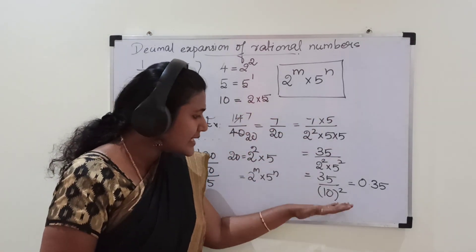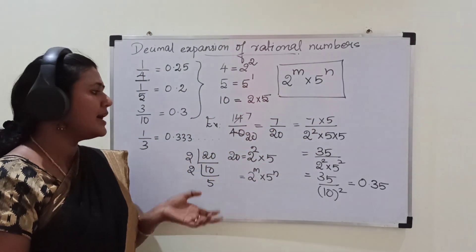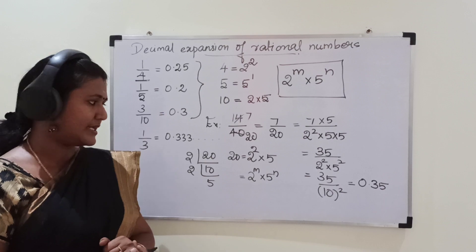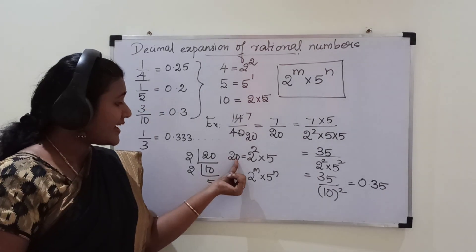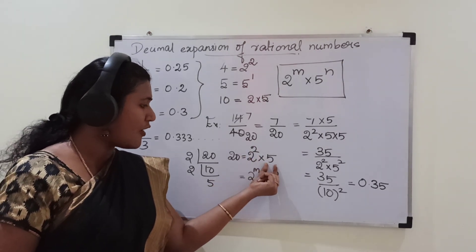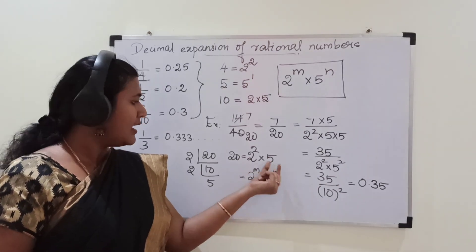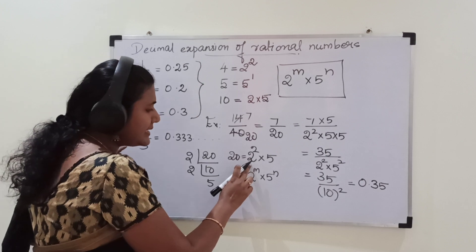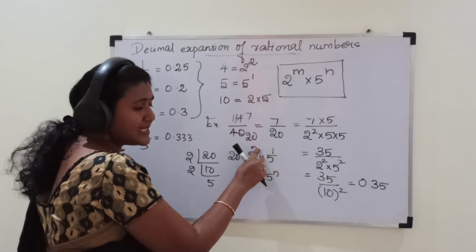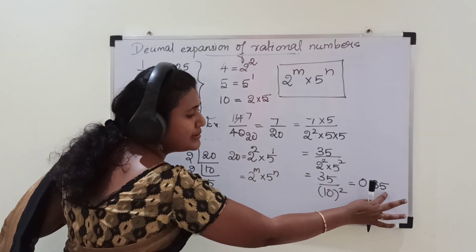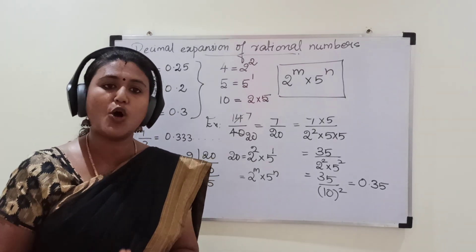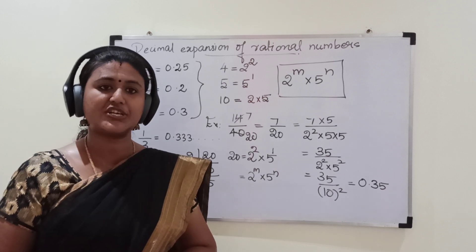Without doing those steps, we can easily find after how many decimal places the expansion will terminate. Look at the prime factorization of the denominator and check the powers of 2 and 5, then take the highest power. Here the power of 2 is 2 and the power of 5 is 1; the highest is 2. So after 2 decimal places the number will terminate. This is an easy method to find after how many decimal places the decimal expansion will terminate.